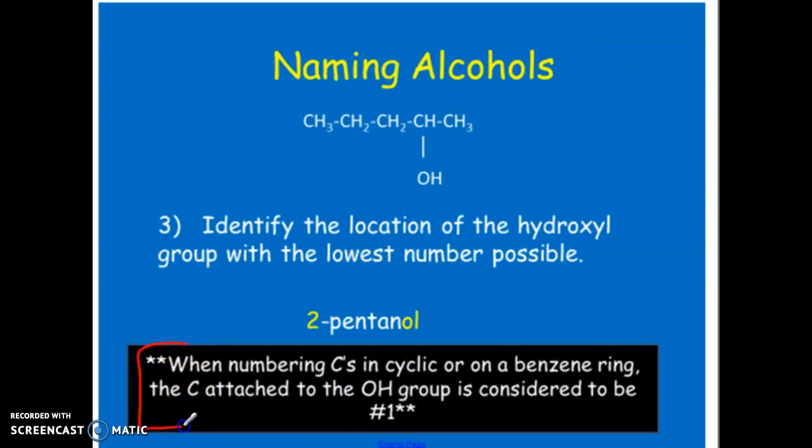If you have a benzene ring or any cyclical structure - let's say I have cyclopentane and there's an OH group here and there's a methyl group here - same thing. The OH group carbon on your cyclo or your benzene ring is considered to be carbon number one. Then you would continue to whichever side would give you the lowest set of numbers.